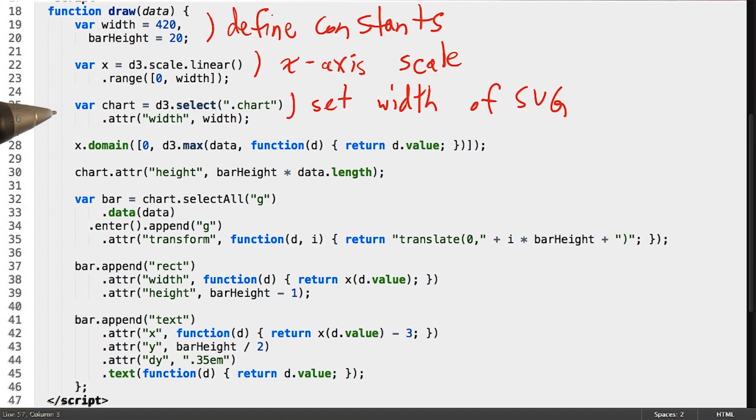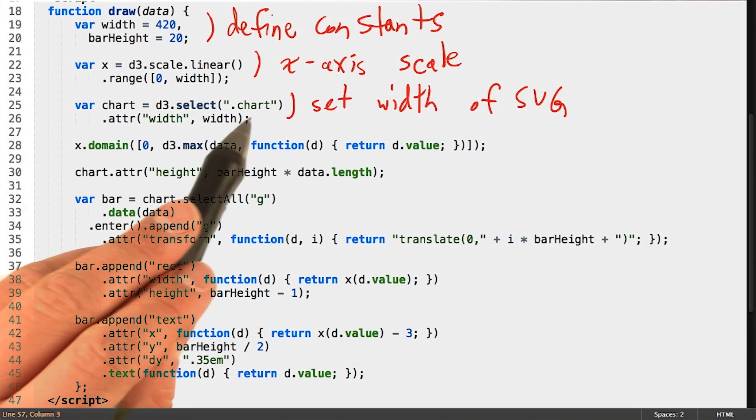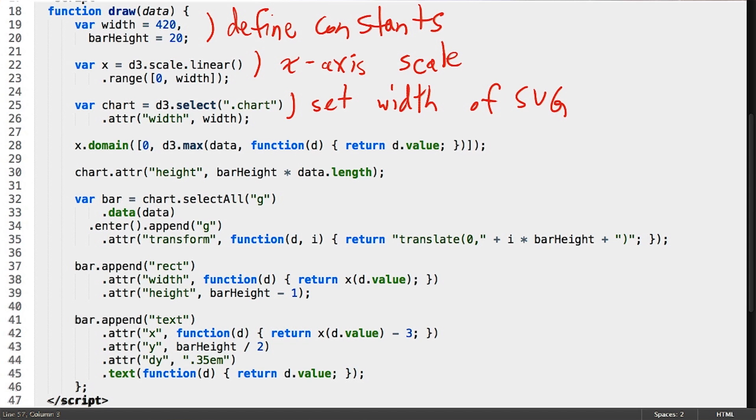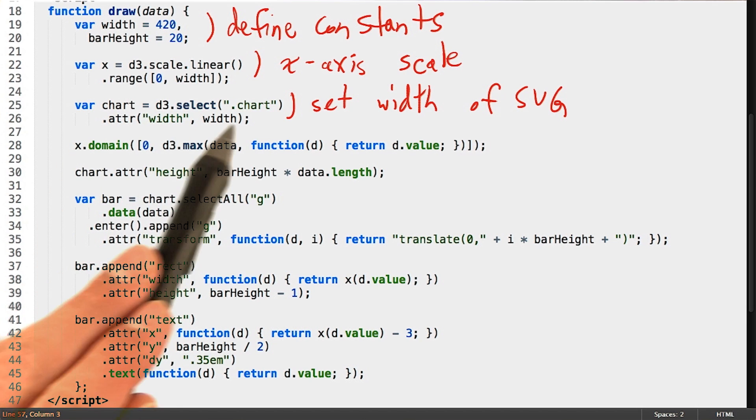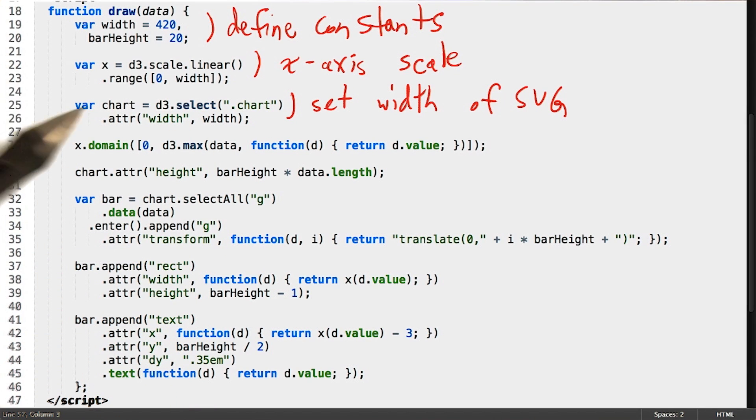The third group of code sets the width on our SVG chart element. If you remember, we hard coded into the HTML an SVG element that had the class chart. So here, we're selecting that chart with d3.select, and then changing the width attribute to the width variable, in this case, 420.